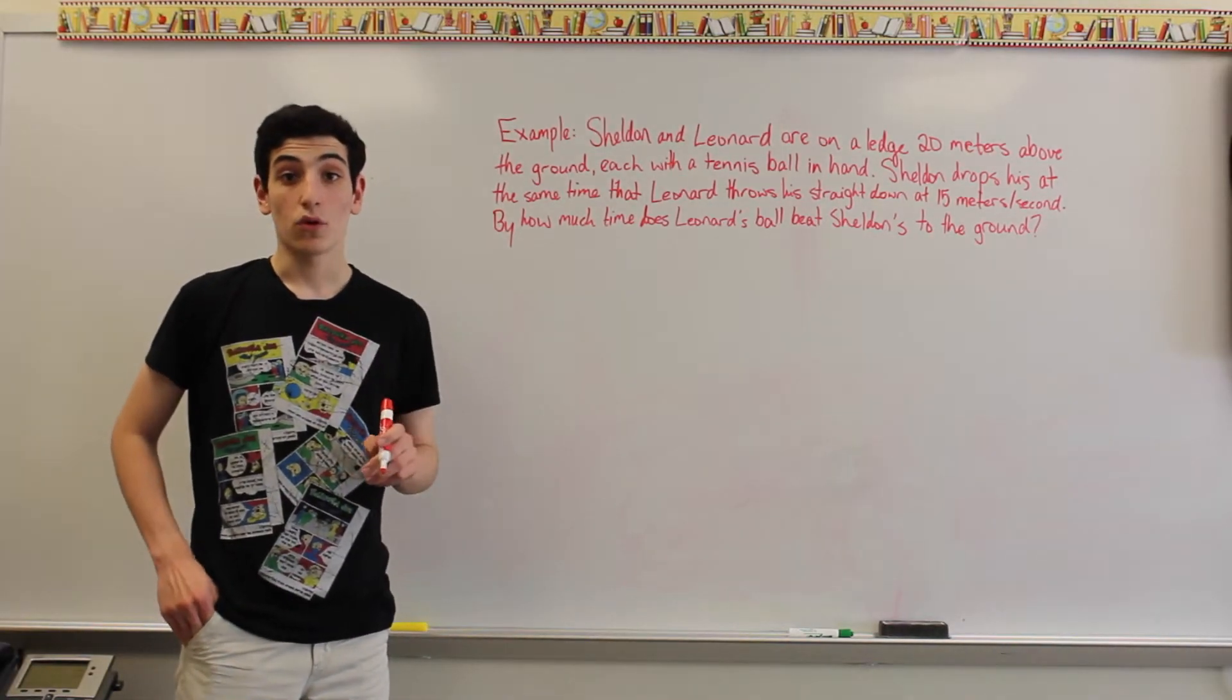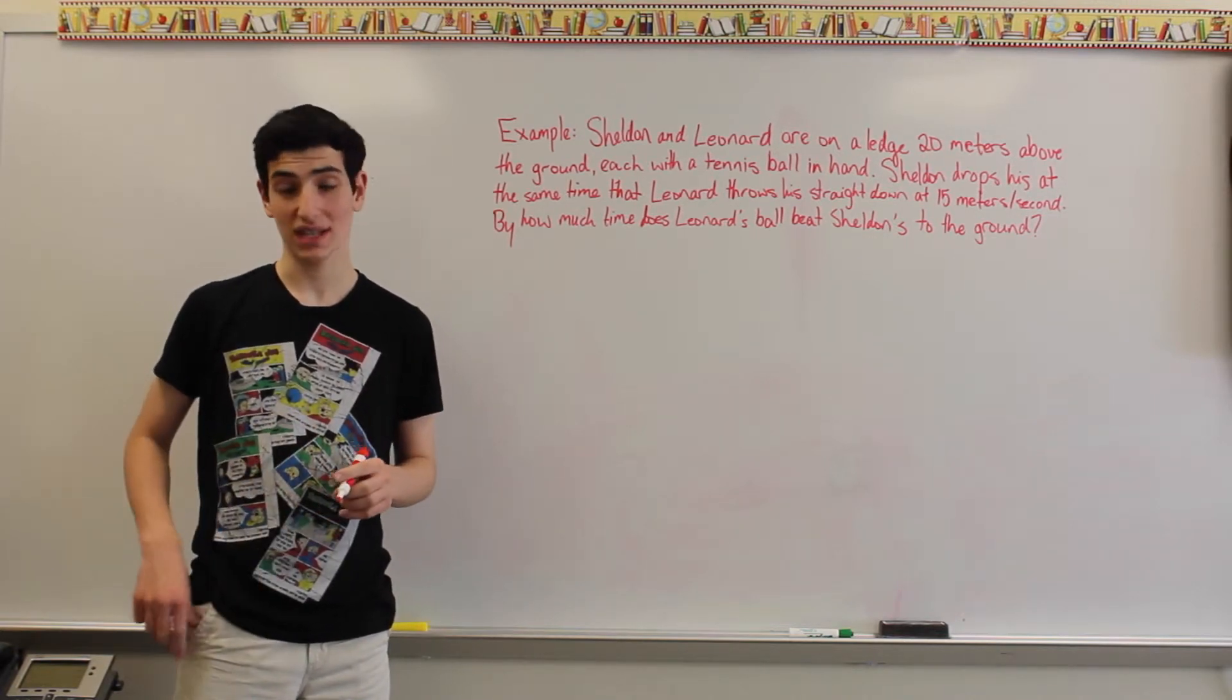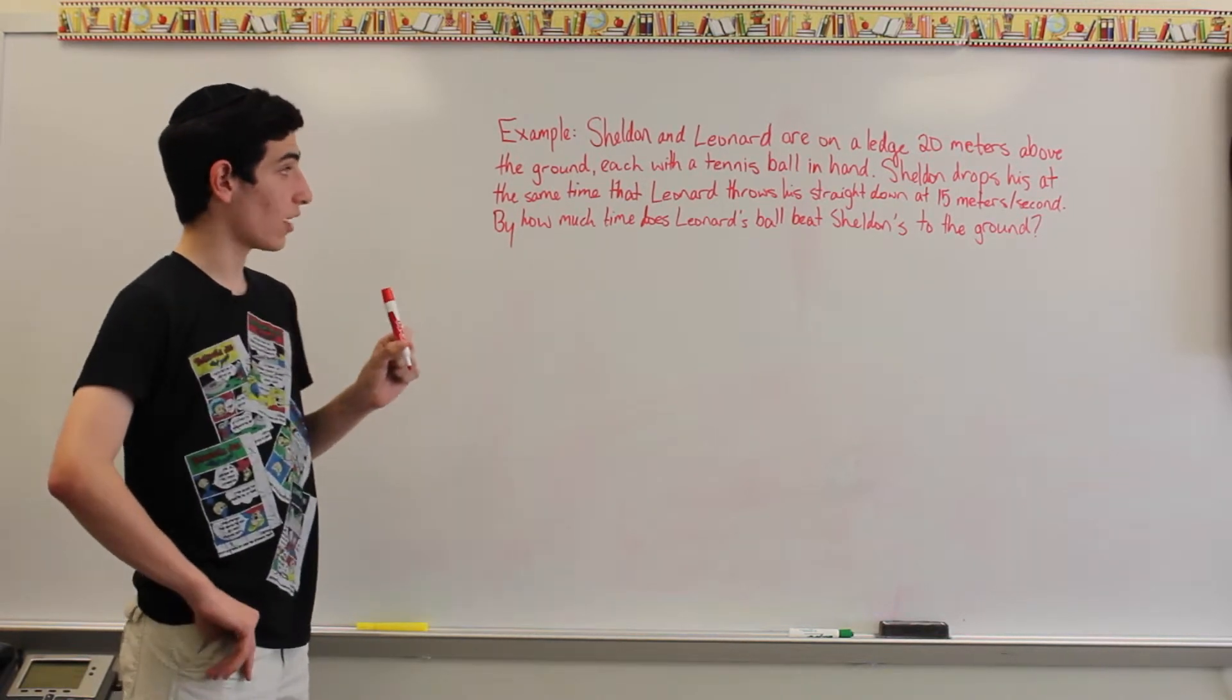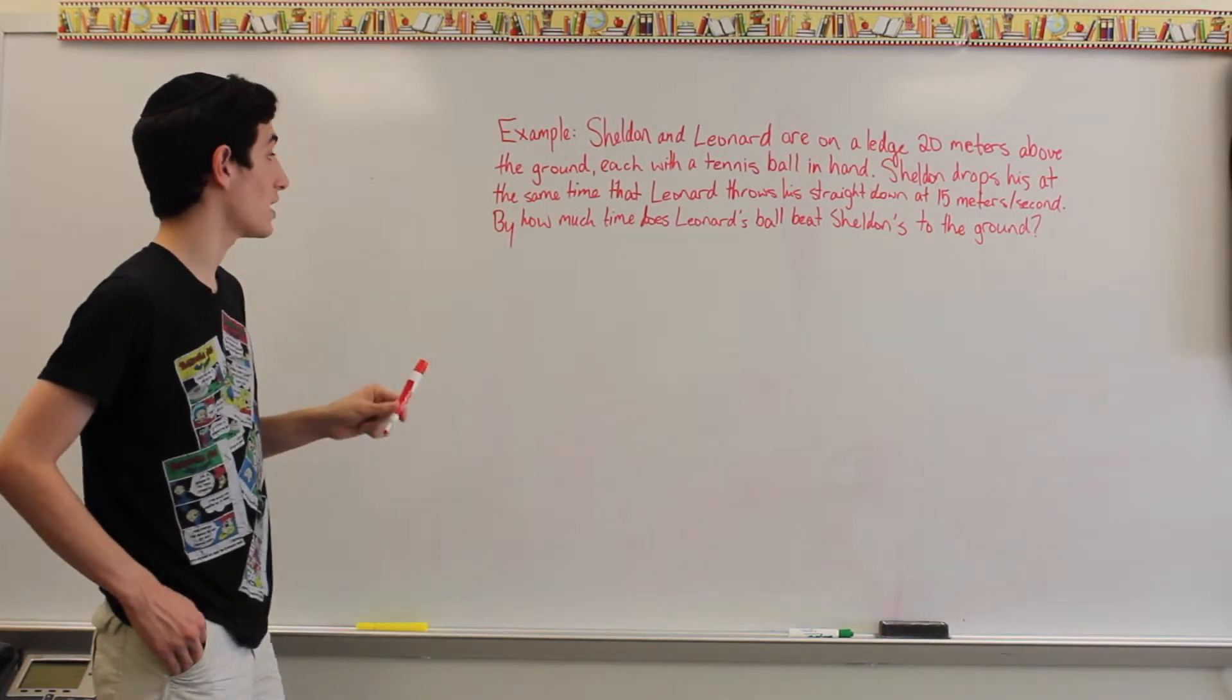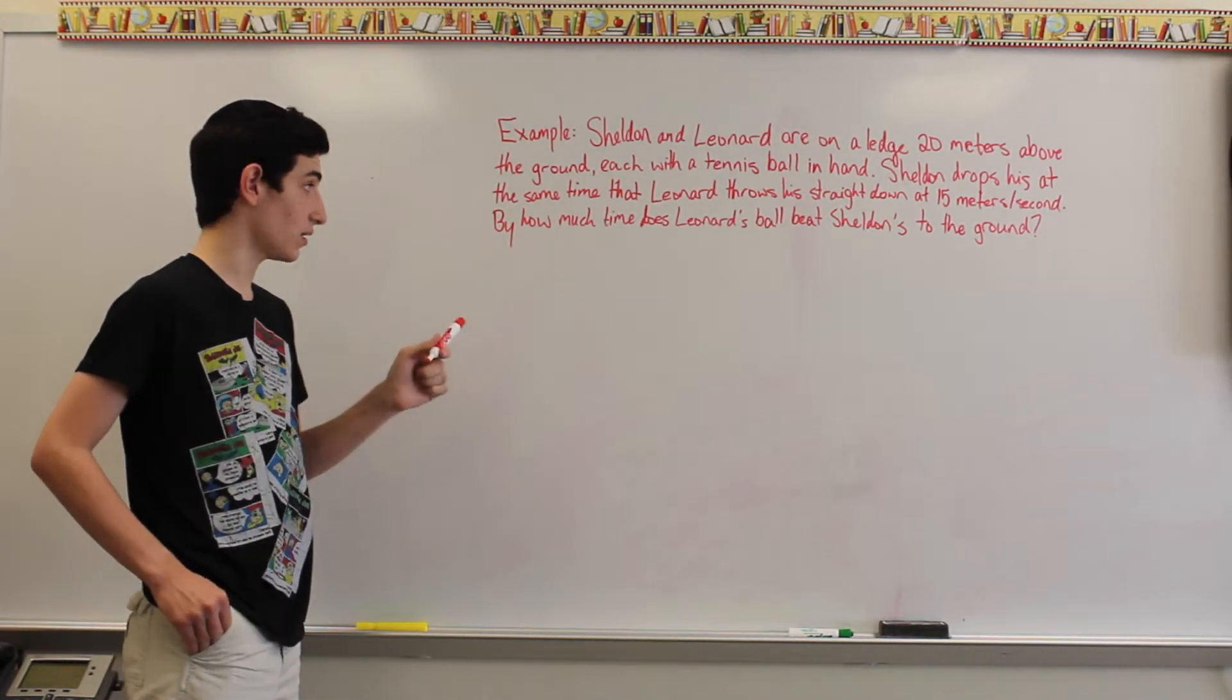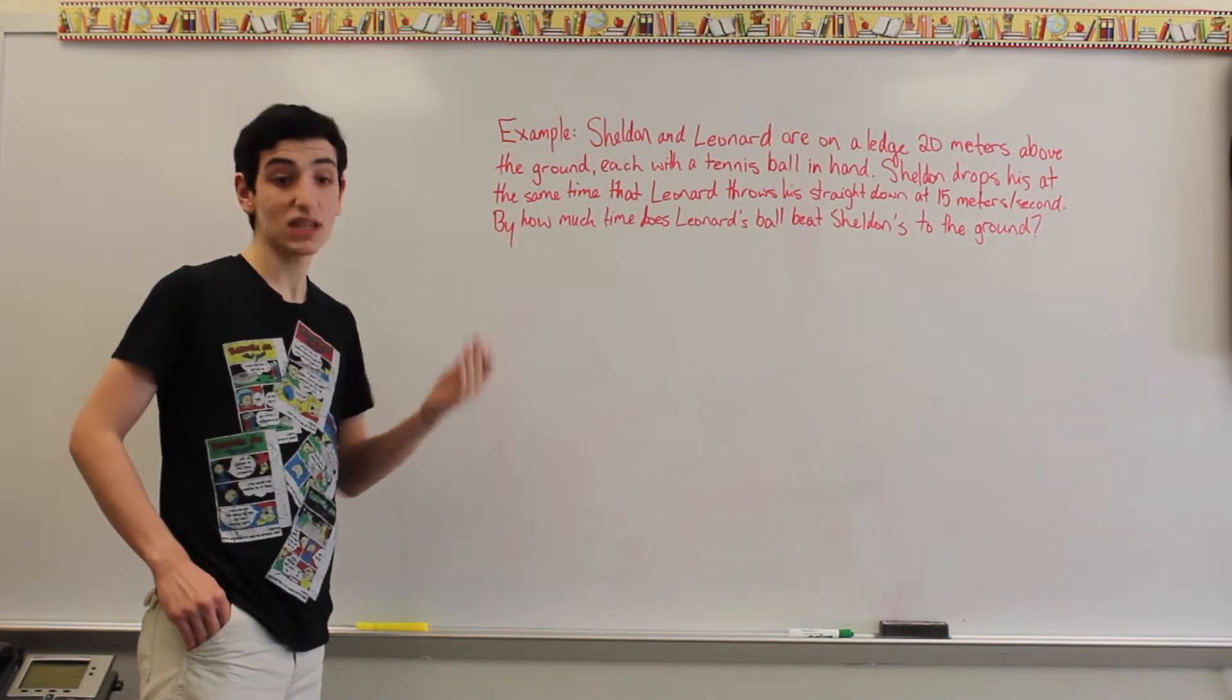Finally, our last example, in order to try to conquer math, is trying to find the difference in times when two objects are approaching the same displacement. So our example is, if Sheldon and Leonard are on a ledge 20 meters above the ground, each with a tennis ball in hand, Sheldon dropping his at the same time that Leonard throws his straight down at 15 meters per second, we want to find out by how much time does Leonard's ball beat Sheldon to the ground.